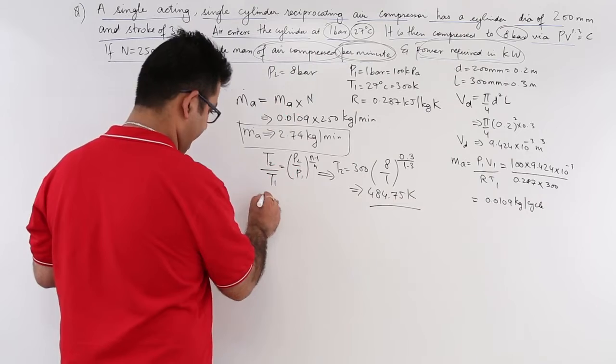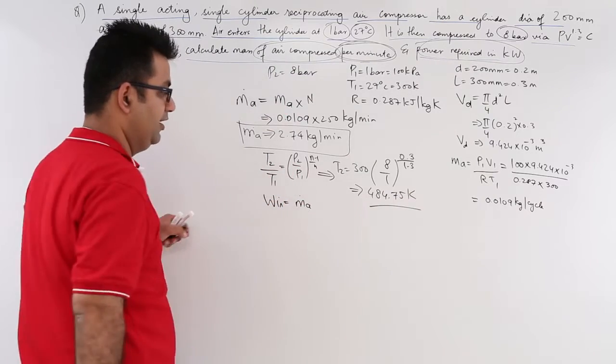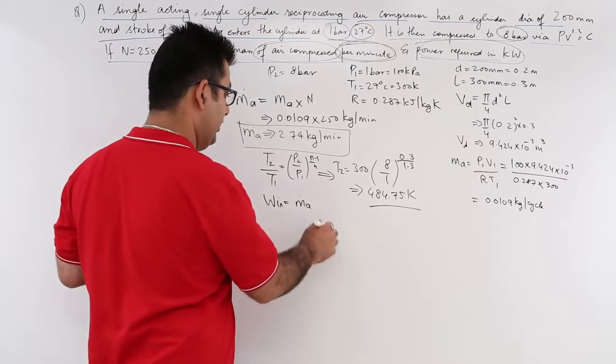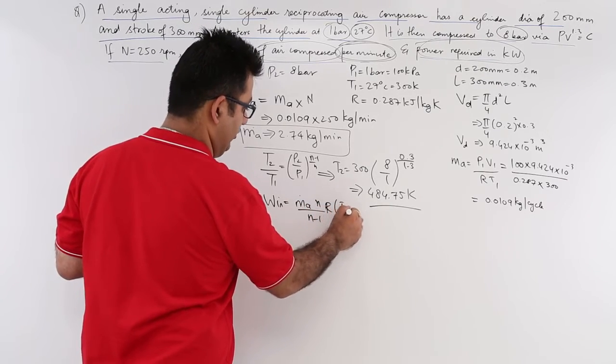Now the work input is mass flow rate per minute into N upon N minus 1 into R into T2 minus T1.